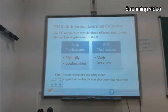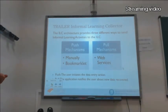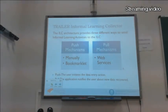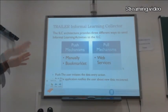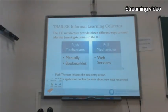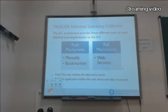Inside the trial project, there is an informal learning collector which is in charge of gathering all informal learning activities that users undertake. There are three mechanisms for doing that, divided into push mechanisms and pull mechanisms. In push mechanisms, we have a manual method for entering data, and also a bookmarklet installed in the browser that allows users to click and send the activities.